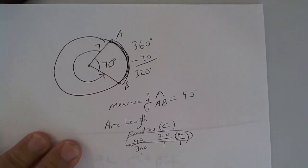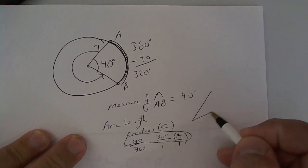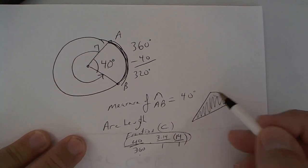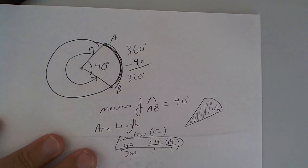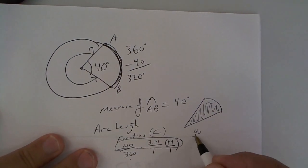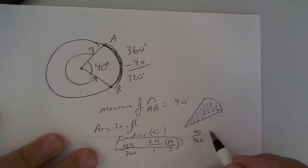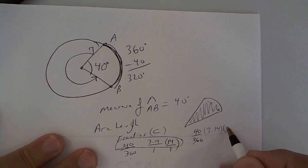Now, on the other hand, if they wanted to know the area of the sector, like a slice of pizza, you would still take the fraction, but only this time you would use area, which is pi radius squared.